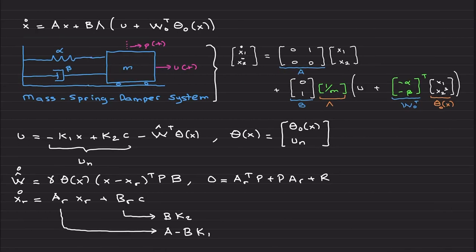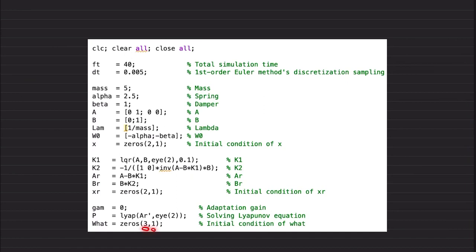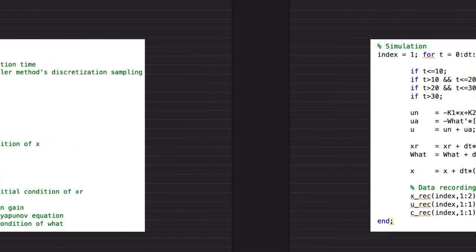Solution for w hat: this is three by one. Why three by one? Don't forget, look at here—u is in this case one by one, you have one control input. So this needs to be one by one, this part is two by one, u_n is one by one, so this is three by one, transposed such that this multiplication will be one by one. That's why the initial condition for w hat is three by one.